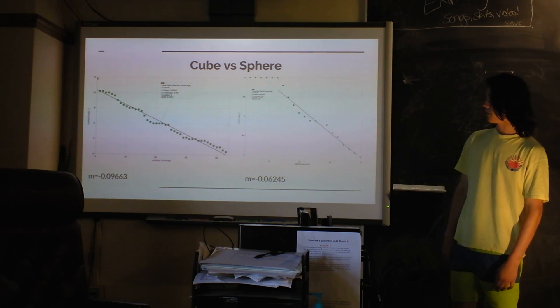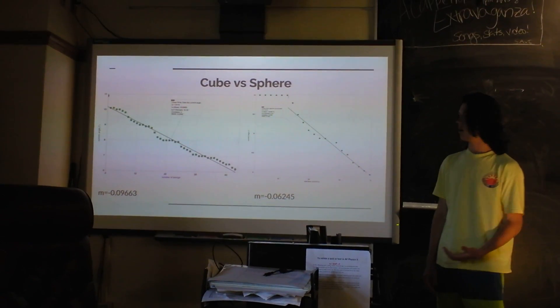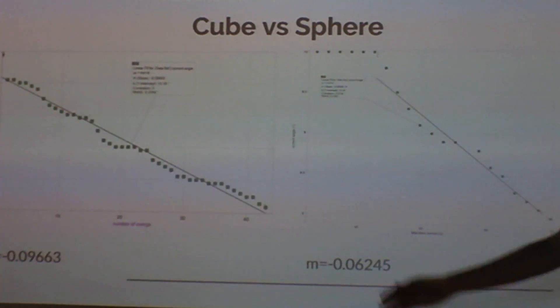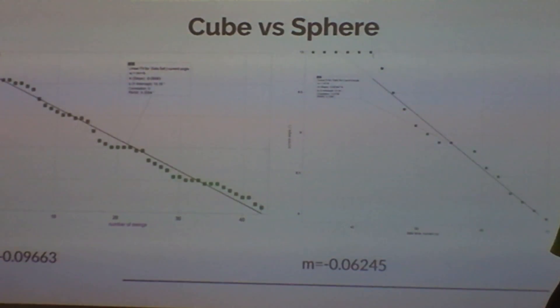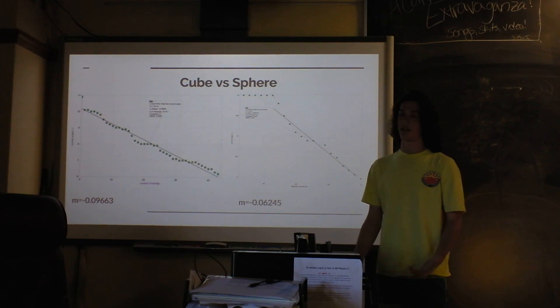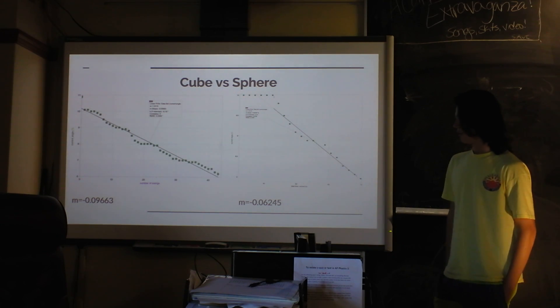I did get some actually kind of useful data, but still kind of wrong as far as the cube versus the sphere. The slope of the graph for the cube, as you can see, was larger, about 1.5 times larger, or yeah larger I guess, but more negative. Which means that it was losing more energy each time, each swing, than the sphere, which is what I expected. You know, naturally there's more drag. So we did learn that much.